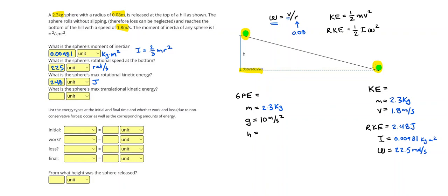Alright, then it asks for the translational kinetic energy. Now I can just use, so I've just used my RKE equation. Now I can use just the regular kinetic energy equation. So one-half times the mass times the velocity squared. And I get 3.73 joules, which is the next answer.